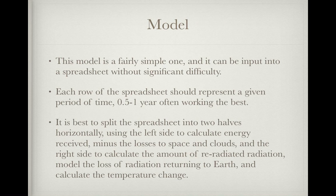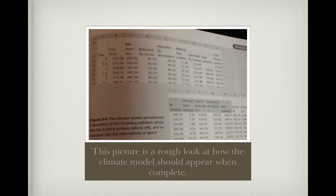The model is a fairly simple one and can be input into a spreadsheet without significant difficulty. Each row of the spreadsheet should represent a given period of time, generally from a 6-month to a 1-year period. It is best to split the spreadsheet into two halves horizontally, using the left side to calculate energy received minus the losses to space and clouds, and the right side to calculate the amount of re-radiated radiation, modeling the loss of radiation returning to Earth and calculating the actual temperature change. A lot of these models can be put in a spreadsheet, but the more complex ones cannot.